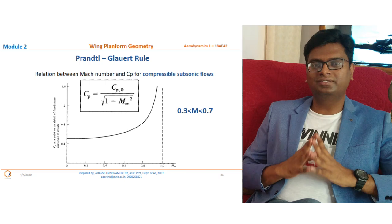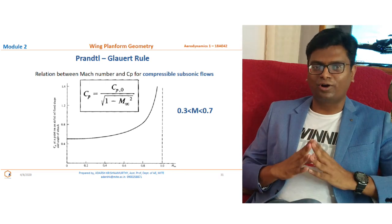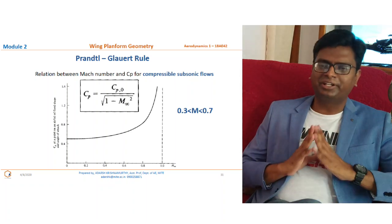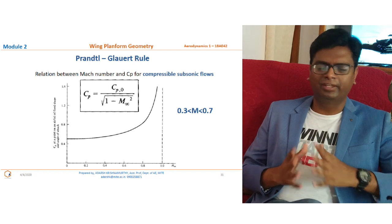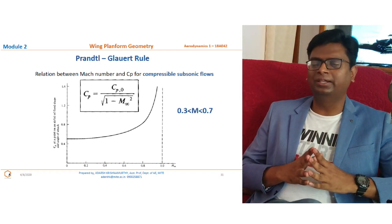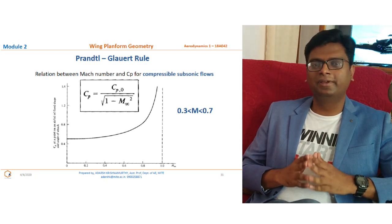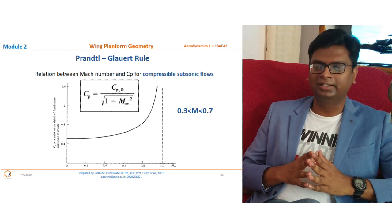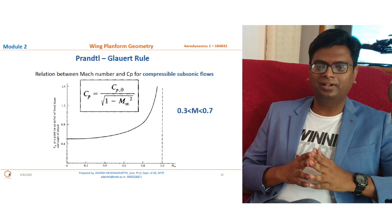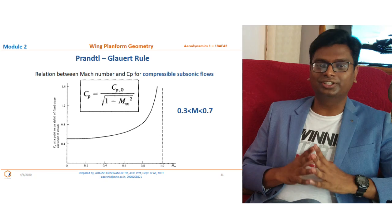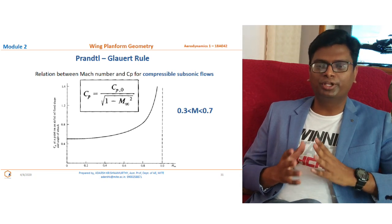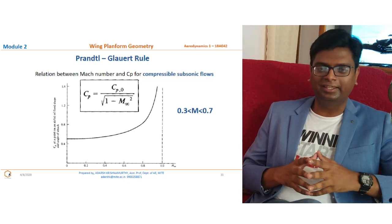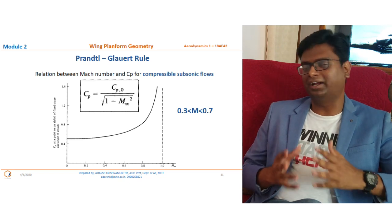According to the Prandtl-Glauert rule, the coefficient of pressure equals Cp₀ divided by the square root of (1 − M∞²), where Cp₀ is the pressure coefficient at Mach number zero and M∞ is the free stream Mach number. Observing the graph carefully, up to Mach 0.3 the variation of Cp is almost the same whether it is 0.1, 0.2, or 0.3. Beyond 0.33, the coefficient of pressure starts varying significantly, as defined by the Prandtl-Glauert rule.